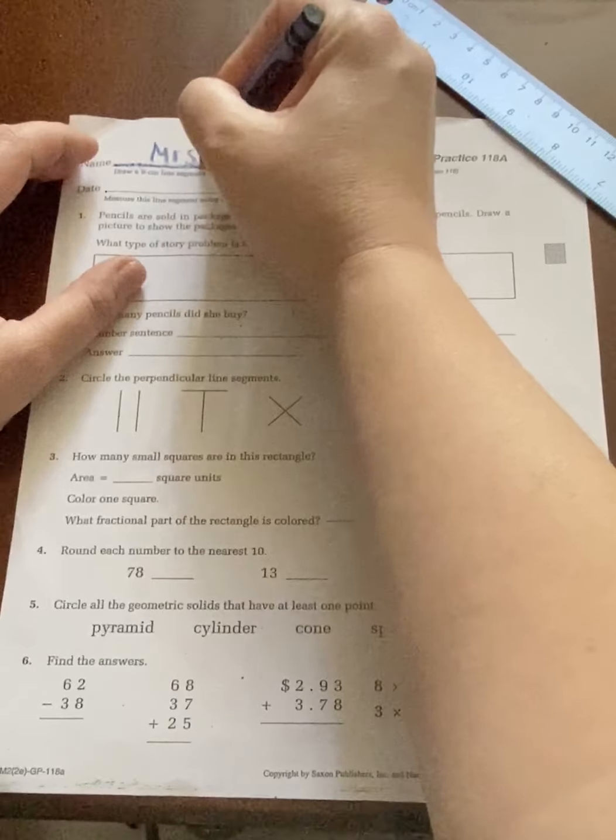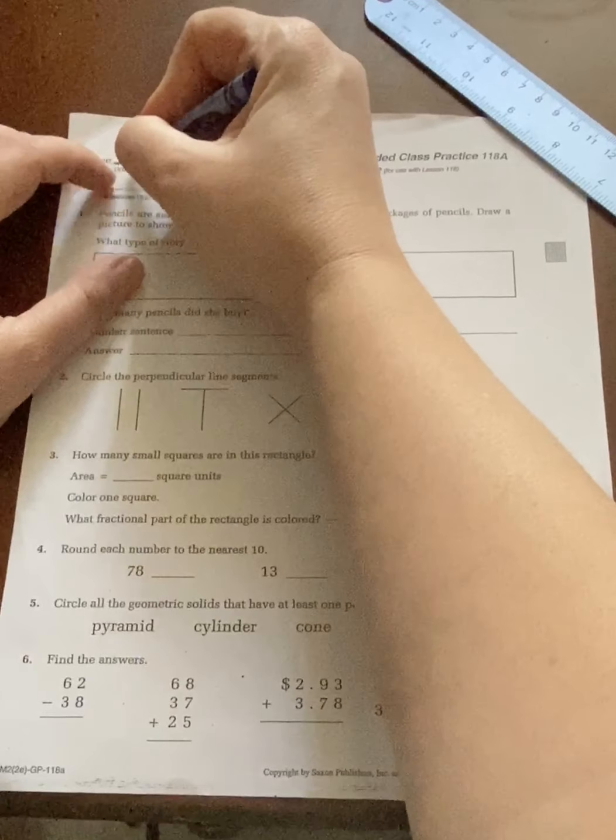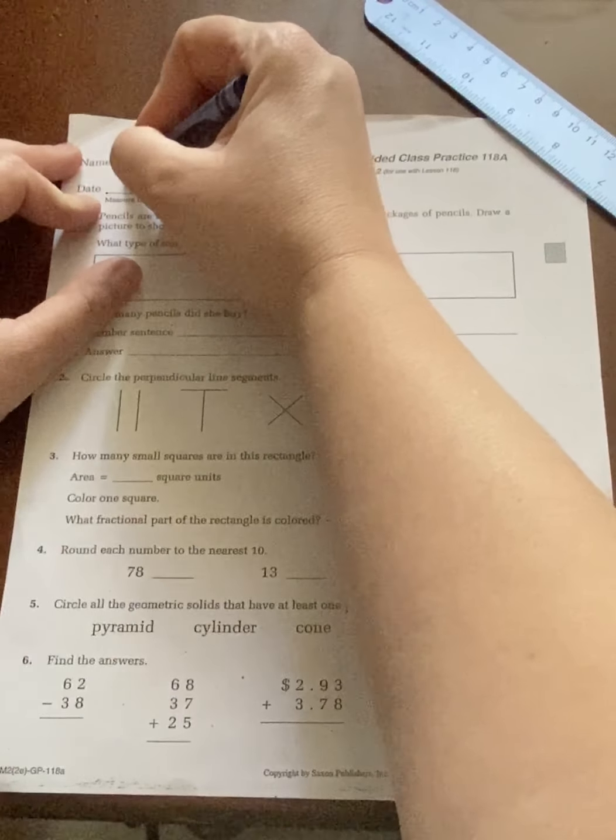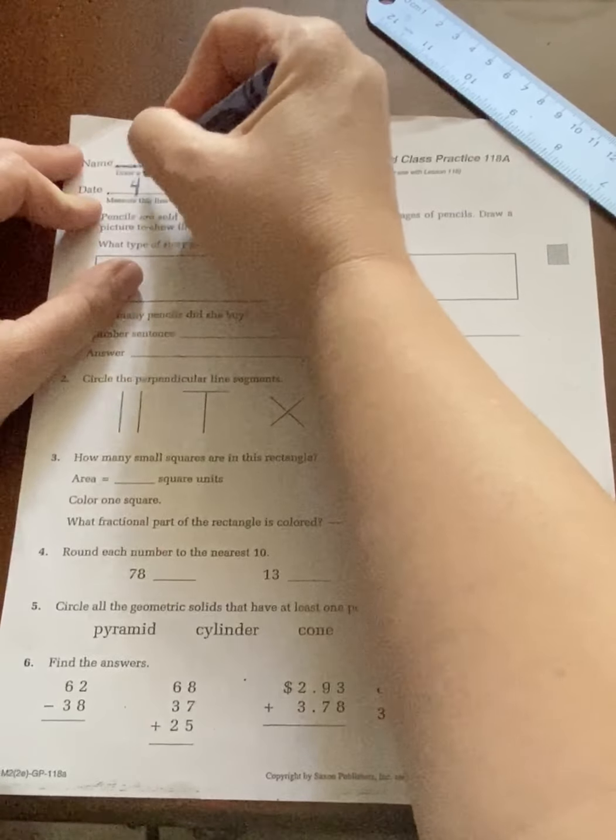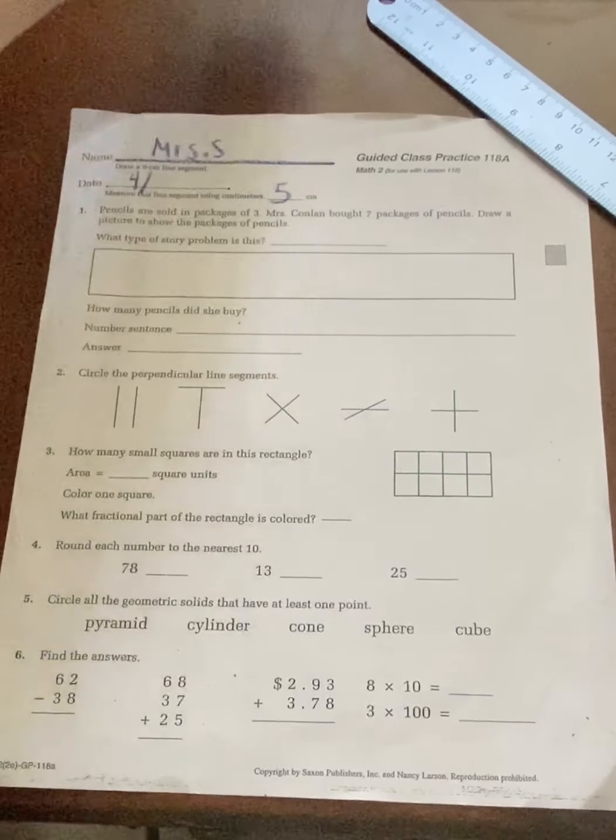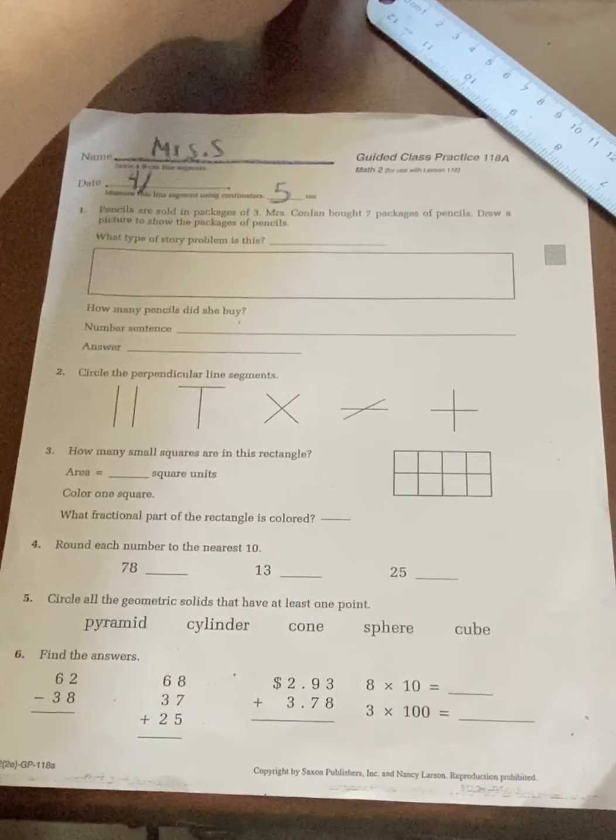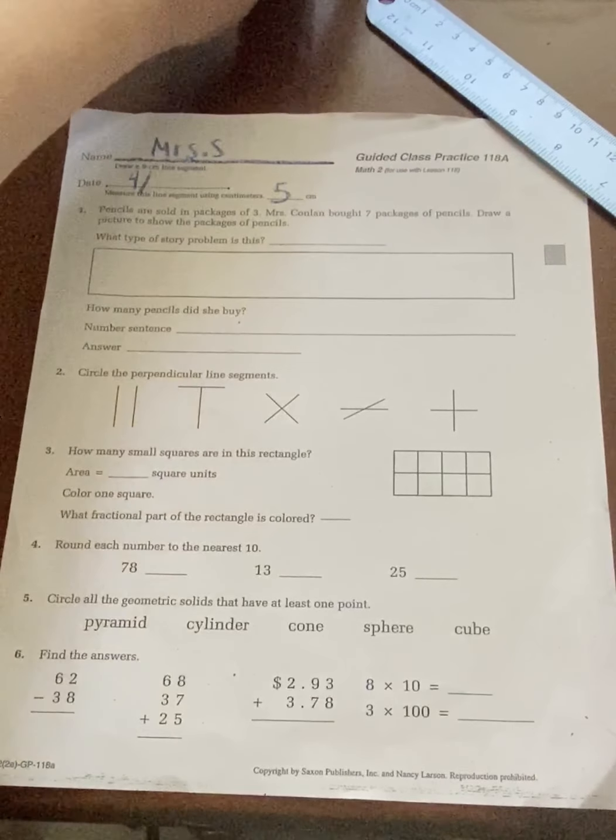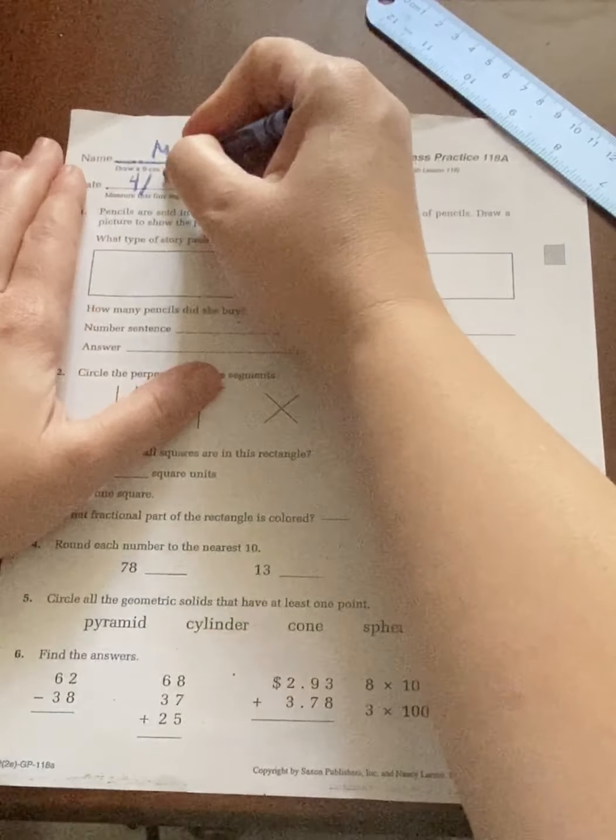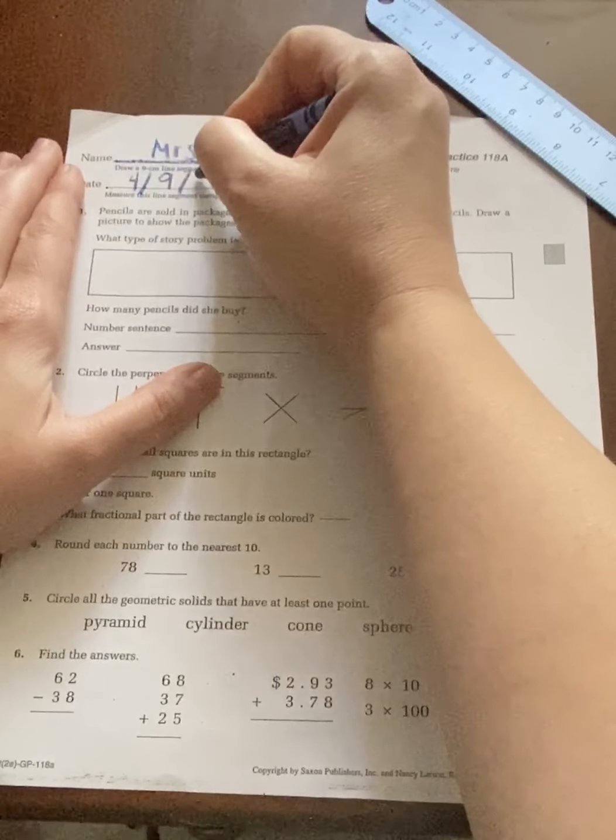So I'm going to write my name, today's date, which is 4-8 today. It is 4-8, but this will be for the 4-9 homework assignment.